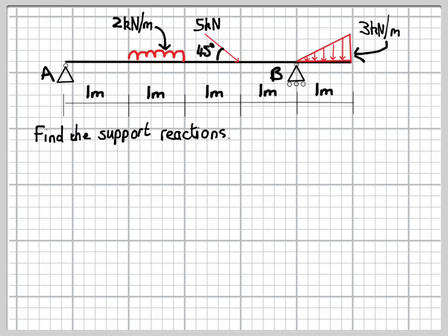The third load, on the right hand side, is a triangular load. So this increases from zero on the left hand side, above the support, to 3kN per metre on the right hand side.